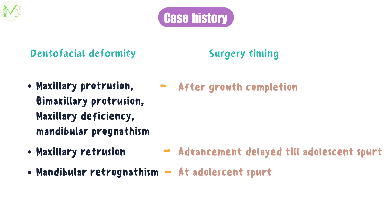Maxillary retrusion is surgically corrected by advancing the maxilla and is delayed till the adolescent growth spurt. Mandibular retrognathism can also be surgically corrected at the adolescent growth spurt.